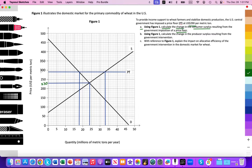You should do that on your test. It also highlights that to provide income support to wheat farmers and stabilize domestic production, the US central government has imposed a price floor of 290. So we see that here, here's 290. In addition, we can see that the demand intercept is at 470. So I'll mark that 470 there. And then the Y intercept for the supply curve is at 70, right over here.